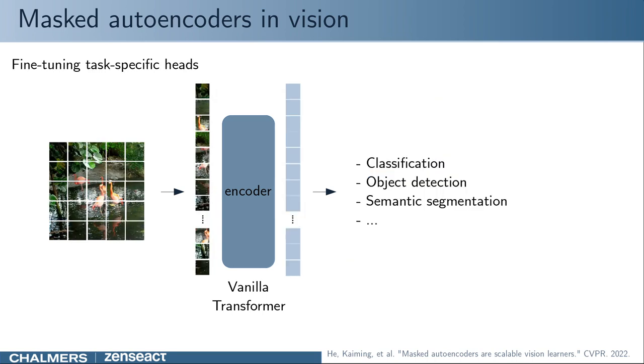After pre-training, the encoder can be used on unmasked images and fine-tuned for different tasks. MAE's effectiveness has been shown for classification, object detection and so on.